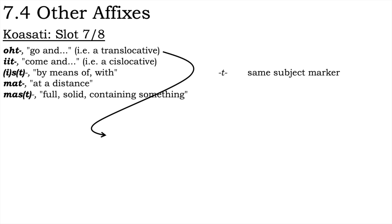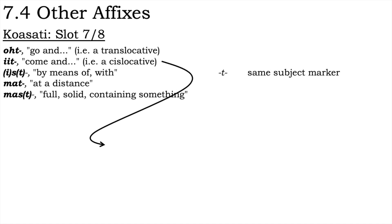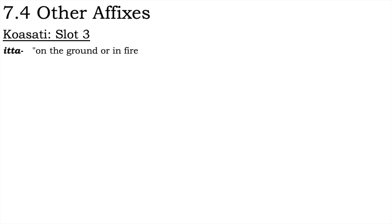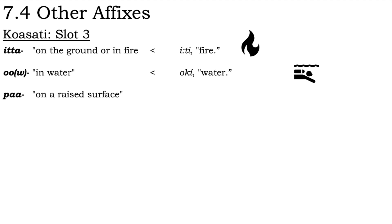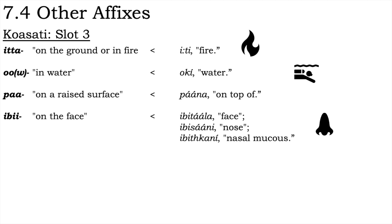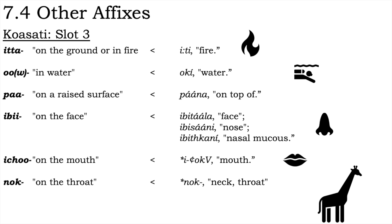Oht- 'go and' is from Proto-Muskogean onat 'to arrive there and,' from the verb ona 'to reach.' And eat- 'come and' is from Proto-Muskogean ilat 'to arrive here and,' from the verb ila 'to come.' A number of the specific locative prefixes can be seen to derive from older incorporated noun roots: itta- 'action on the ground or in fire' may be connected to the Mikasuki noun iti 'fire'; o- 'action in water' is connected to the independent noun oki 'water'; pa- 'action on a raised artificial or non-ground surface' is connected to the postposition pa-na 'on top of'; ibi- 'action on the human face' seems to be related to the nouns ibitala 'face,' ibisani 'nose,' and ibilhkani 'nasal mucus'; icho- 'action on the mouth' is presumably derived from the Proto-Muskogean noun ichoku 'mouth'; and nok- 'action on the human throat' is from the Proto-Muskogean noun nok 'neck or throat.'